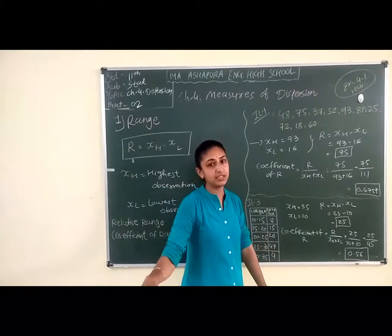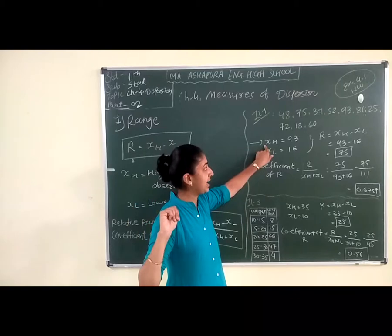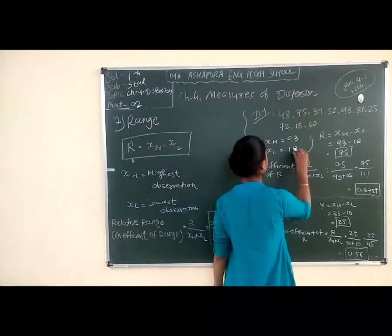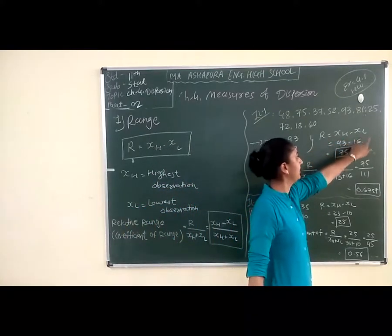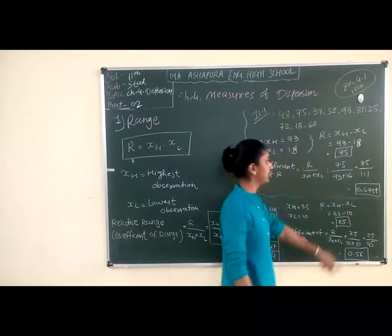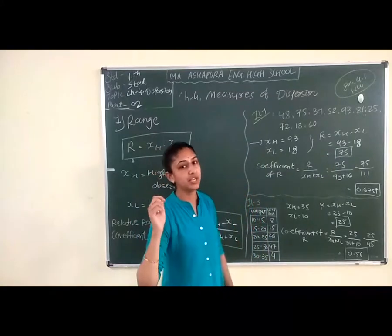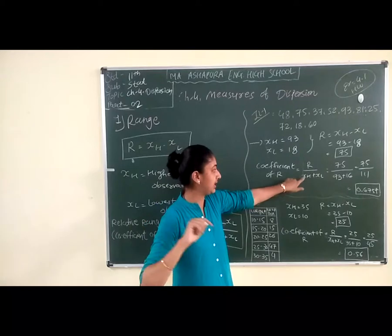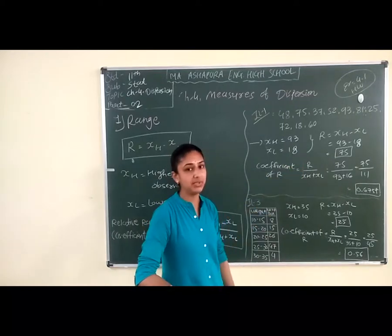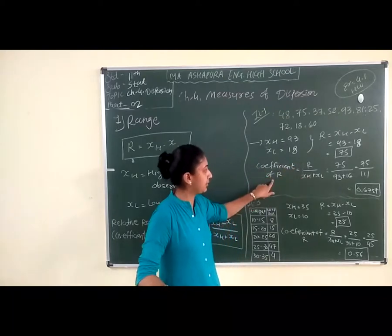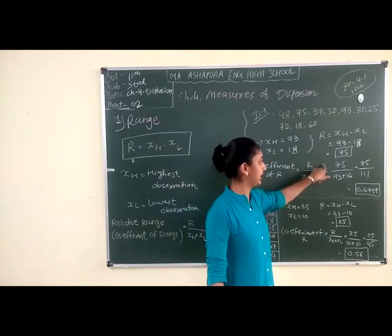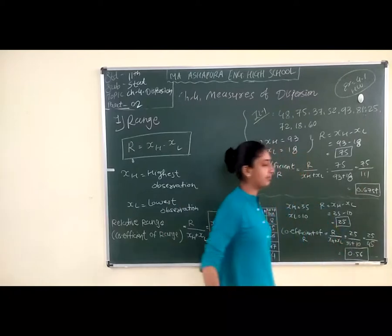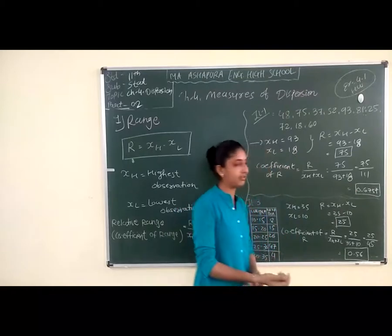We have to find out the highest observation and the lowest observation. The highest observation is 93 and the lowest observation is 18. So R is equal to XH minus XL: 93 minus 18 is equal to 75. R equals 75. Now, the coefficient of range is R divided by XH plus XL, which is 75 divided by 93 plus 18, equals 75 divided by 111. So the coefficient of range is 0.6757.